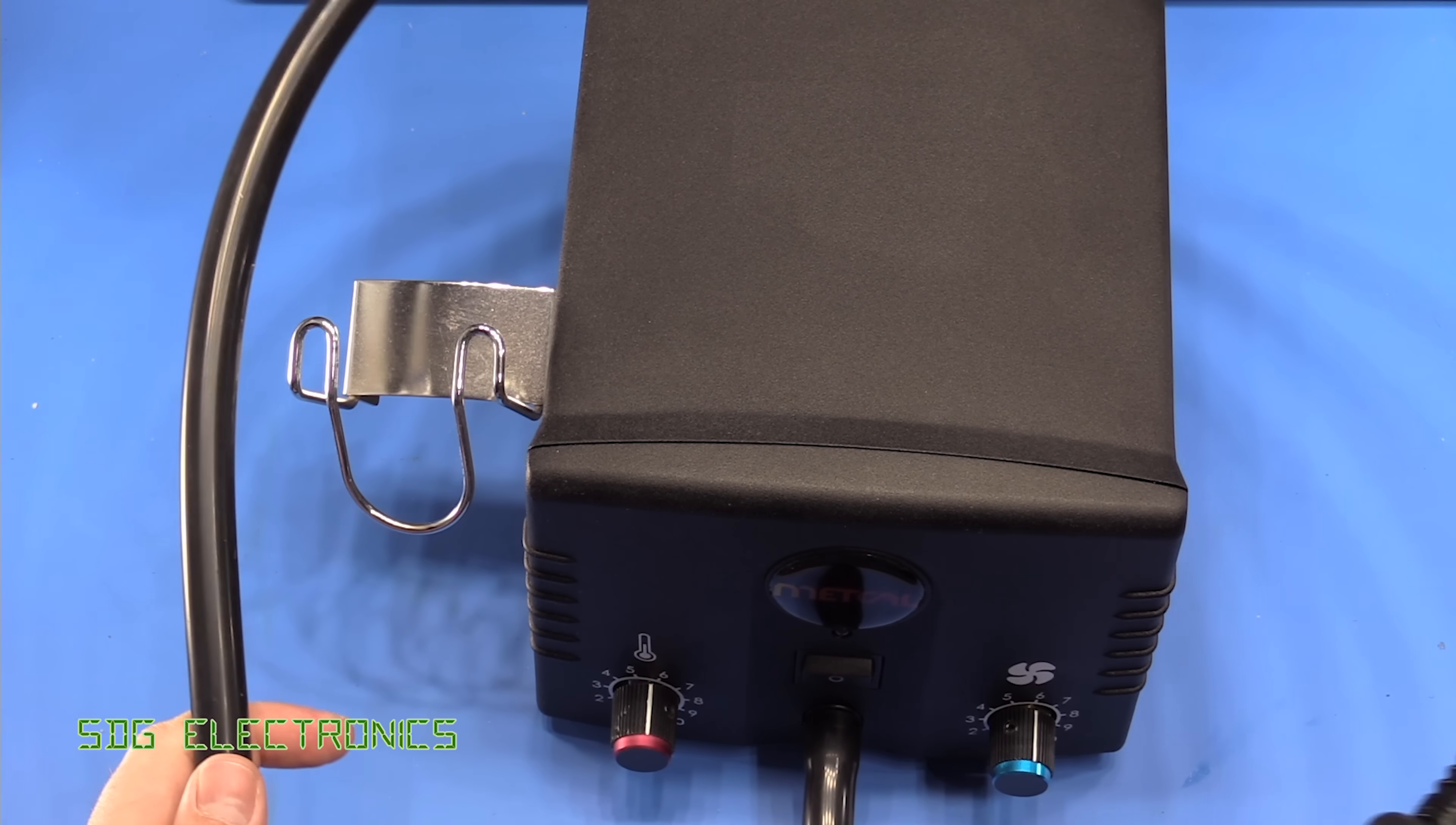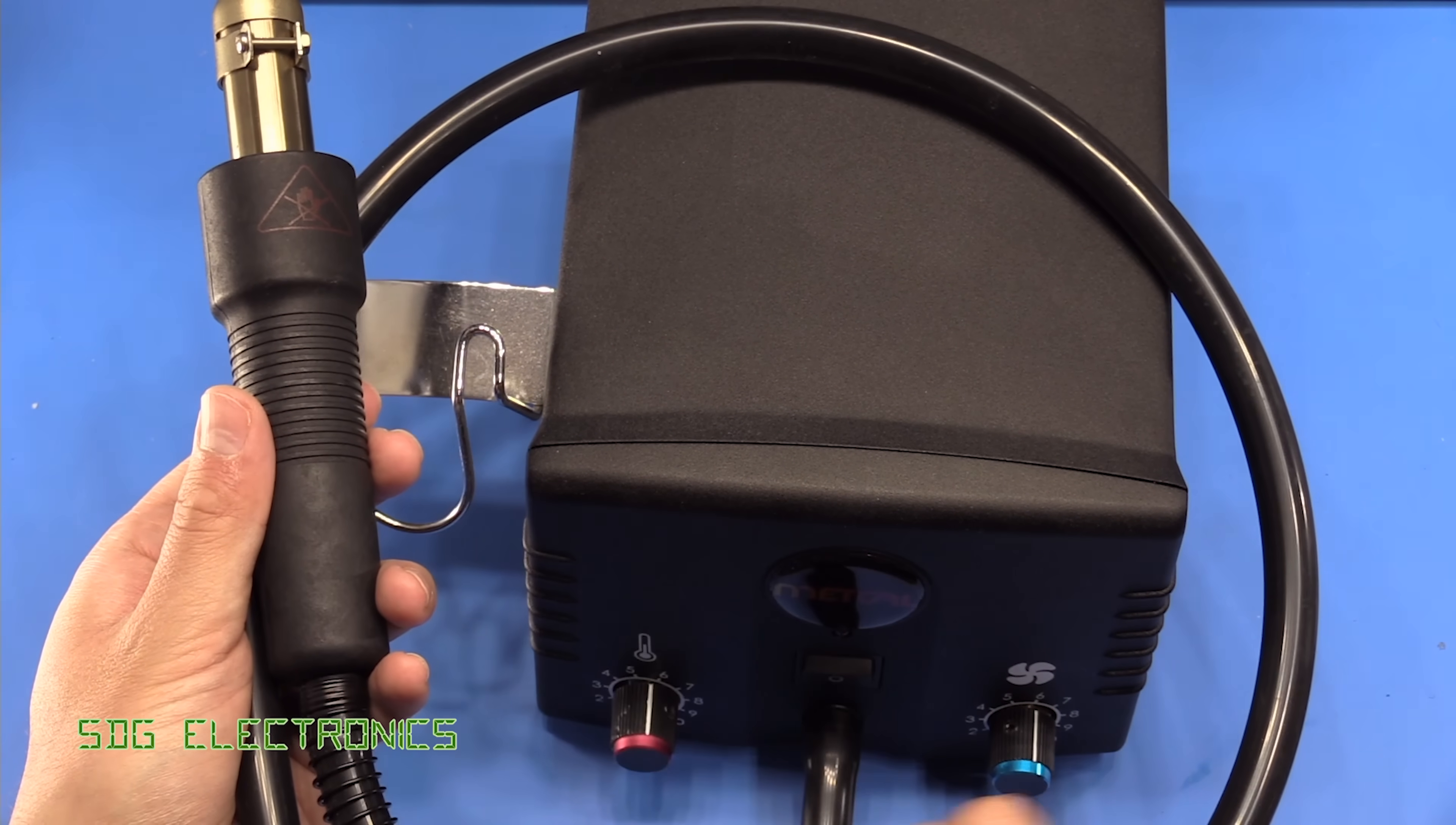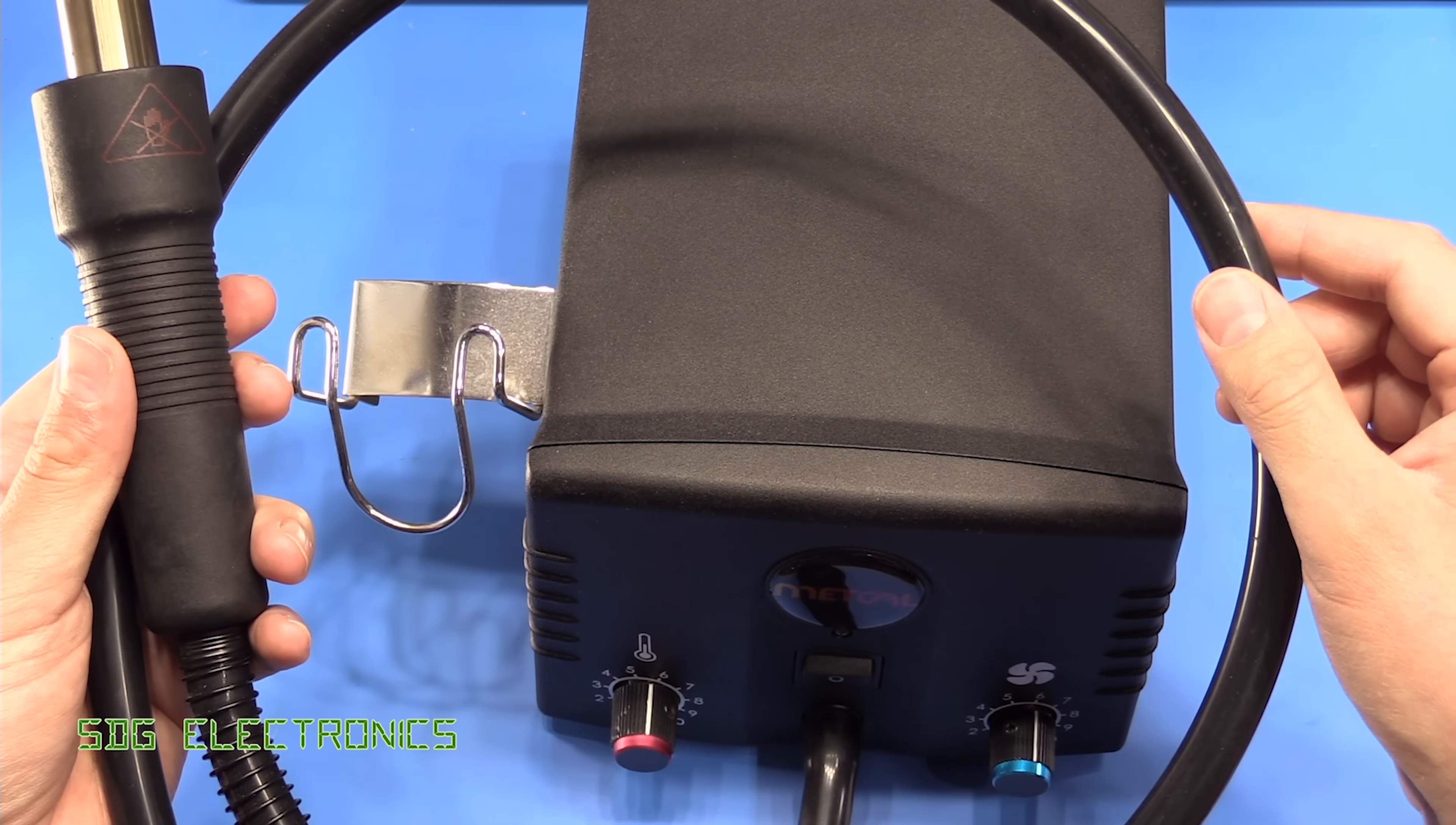The other thing is that the hose that it comes with, the blower is obviously in here so this is very lightweight. The air is blown through the hose to the handpiece and then you've got presumably some wires for the heater and the thermostat. This is about a meter in length, which is quite refreshing.